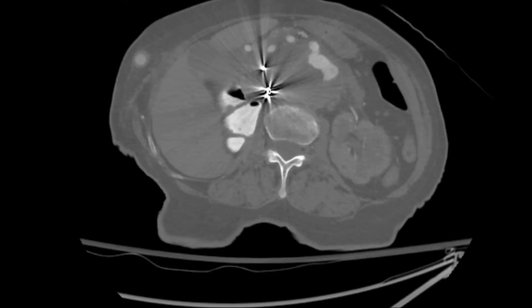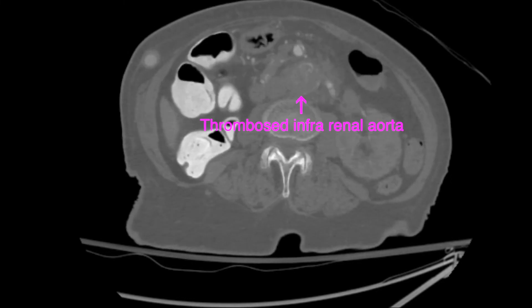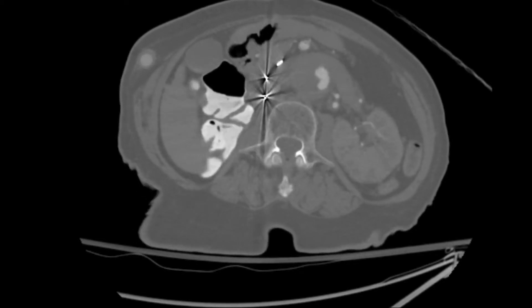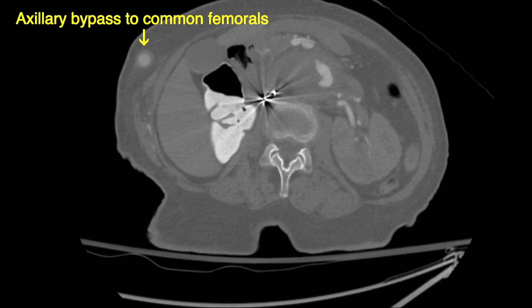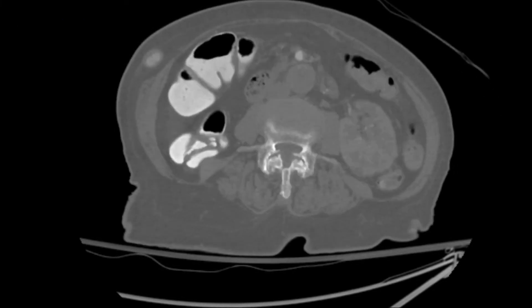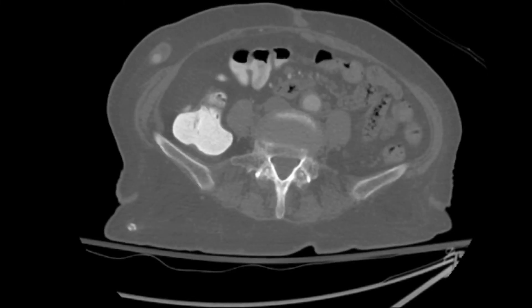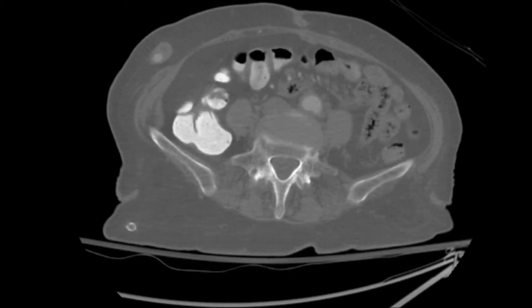Also demonstrated on this CT scan is a patent left renal artery and an occluded infrarenal aorta. Shown here is the axillary artery bypass to the bilateral common femoral arteries, as well as the reconstitution of the infrarenal abdominal aorta just above the bifurcation into the iliac arteries.